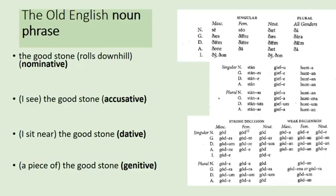Modern English pronouns actually do have cases. You can't say 'I see he' — that's wrong. You say 'I see him.' You don't say 'me see him.' So we use different pronouns depending on whether they're the subject, the direct object, or the indirect object. Imagine if we had to do that with all nouns, not just pronouns. This is the case in Latin, Russian, Sanskrit, Romanian, and many other world languages — especially Indo-European languages.